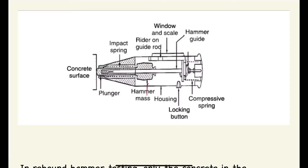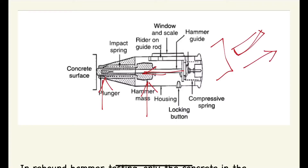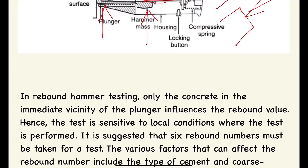As shown in the diagram, this is the hammer mass (spring-controlled mass), this is the plunger, and it operates through a tubular casing. When we push the hammer on the concrete surface, the hammer goes in, the spring-controlled mass is retracted, reaches a certain point, releases automatically, and impacts the concrete surface hard — giving us the rebound number.